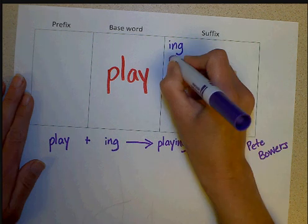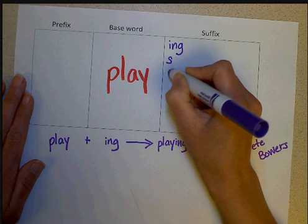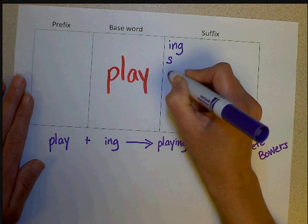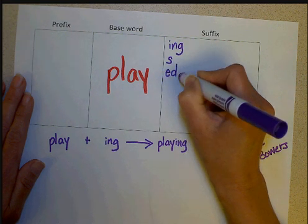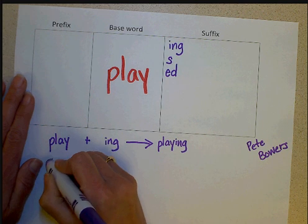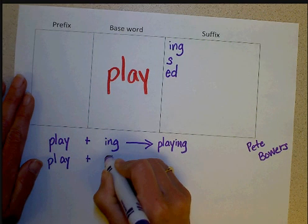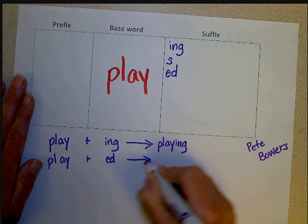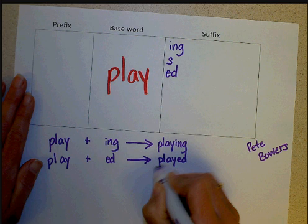We could also do plays, right? So just add our basic suffix S. We could do played. Even though it sounds like a D, we think about the meaning. What does it mean? I did it in the past. So when we mean in the past, we add suffix E-D. So P-L-A-Y plus E-D is rewritten as P-L-A-Y-E-D, played.